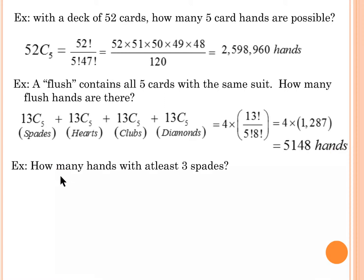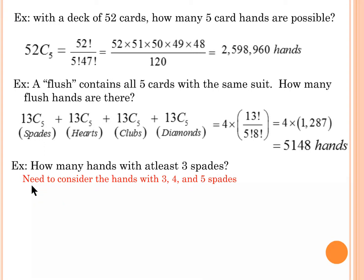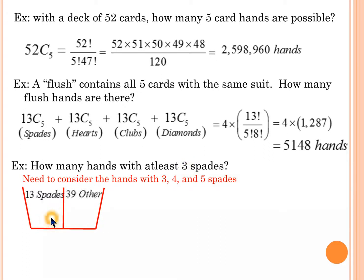How many five-card hands have at least three spades? At least three means we could have three, four, or five spades. Using the bin method: for three spades, it's 13 choose 3 times 39 choose 2 (since 39 other cards remain). For four spades, it's 13 choose 4 times 39 choose 1. For five spades, it's 13 choose 5 times 39 choose 0. We multiply bins together via the fundamental counting principle and 13 plus 39 gives all 52 cards.